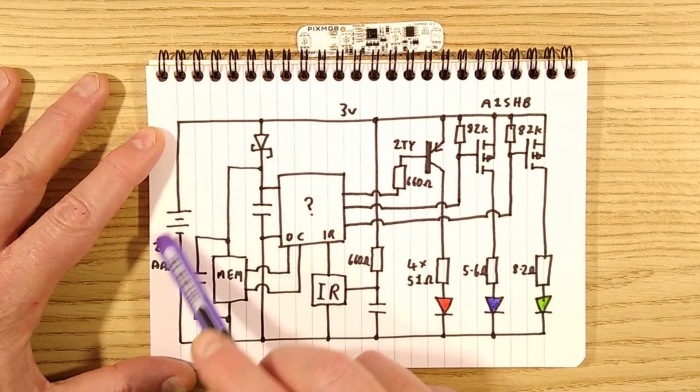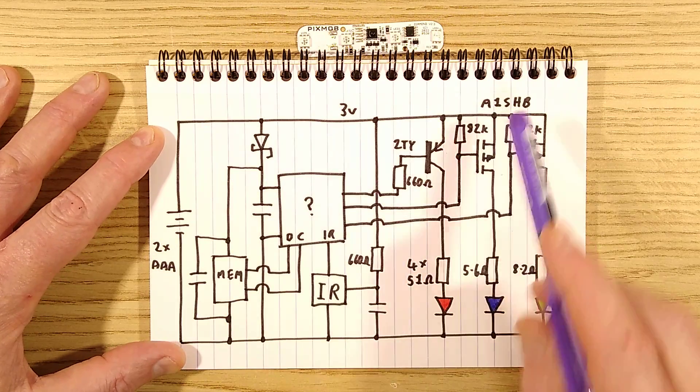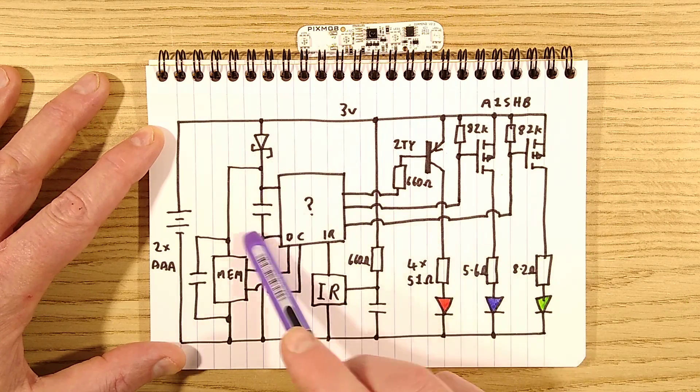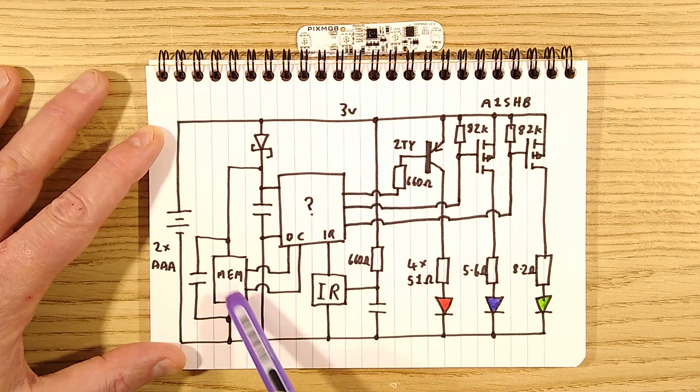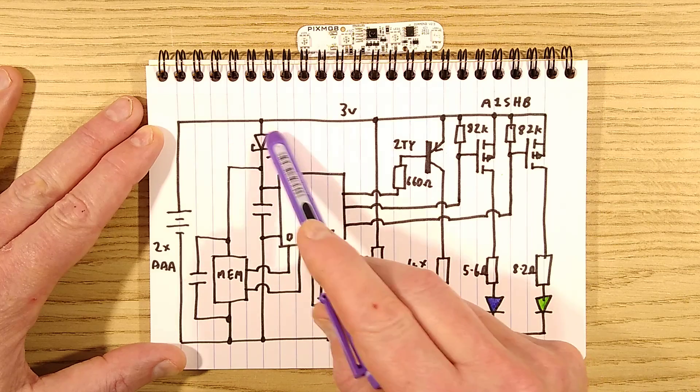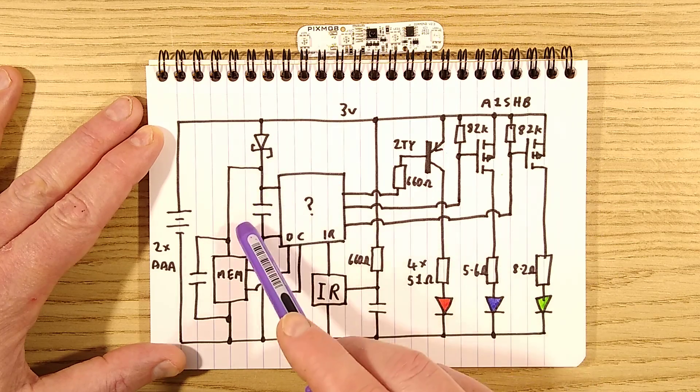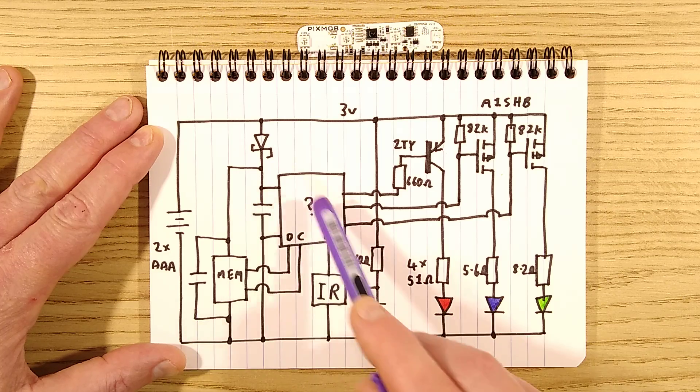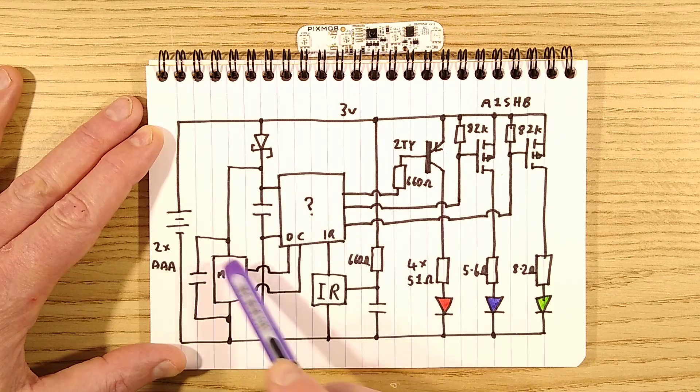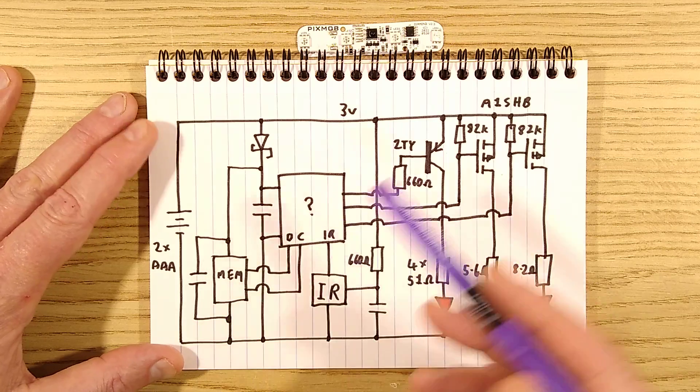So here are the two AAA cells, giving us a 3-volt rail. And there is an element of decoupling for the power supply for both the microcontroller and the memory chip via this Schottky diode, feeding this capacitor. And there is a decoupling capacitor next to the microcontroller and one next to the memory chip. It's a well-designed circuit.